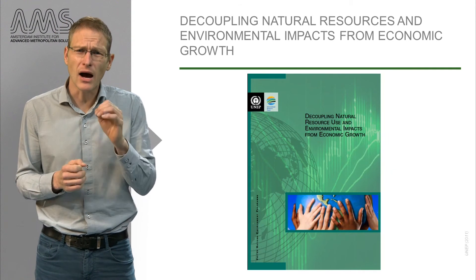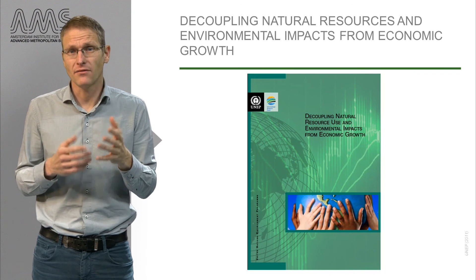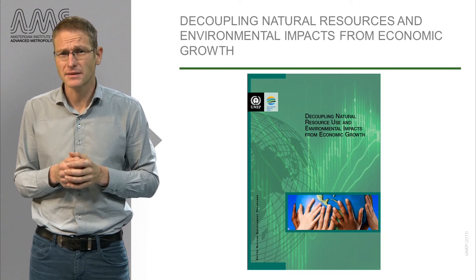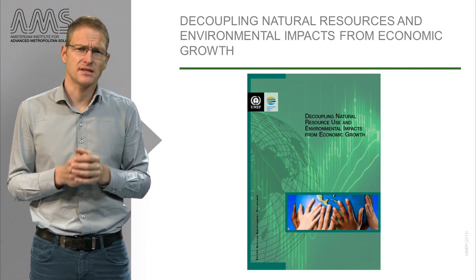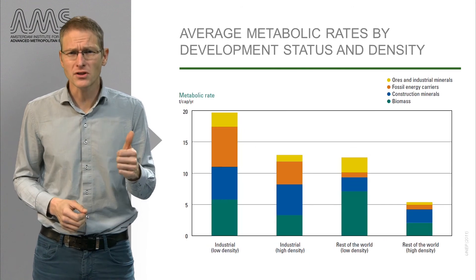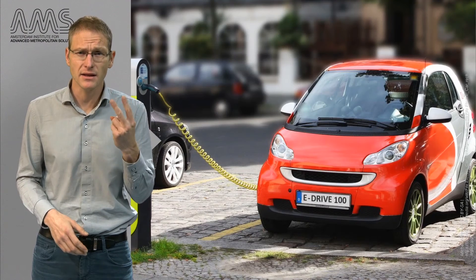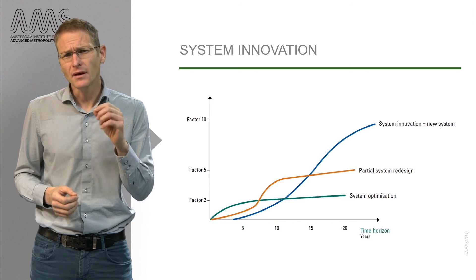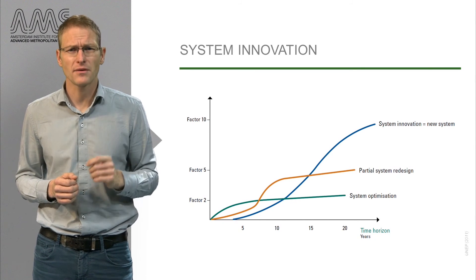But the question remains: how can decoupling then be achieved? The UN Environmental Program report on decoupling natural resource use and environmental impact from economic growth puts cities forward as places for reaching this decoupling. They have two key arguments for this: firstly, the positive relationship between density and resource use, and secondly, the fact that cities are hubs of innovation. In the report, they argue that system innovation is necessary rather than optimization.